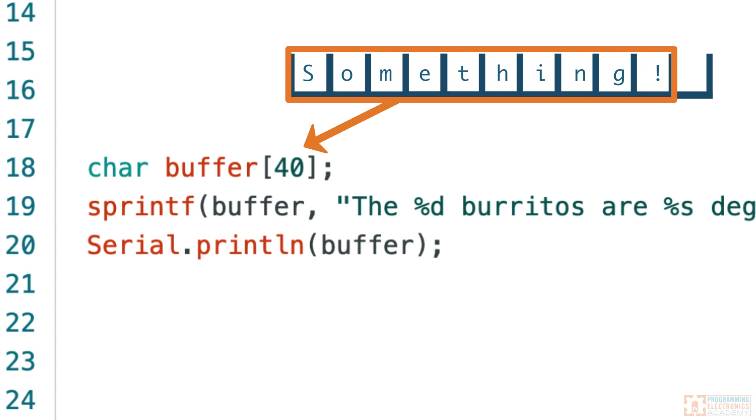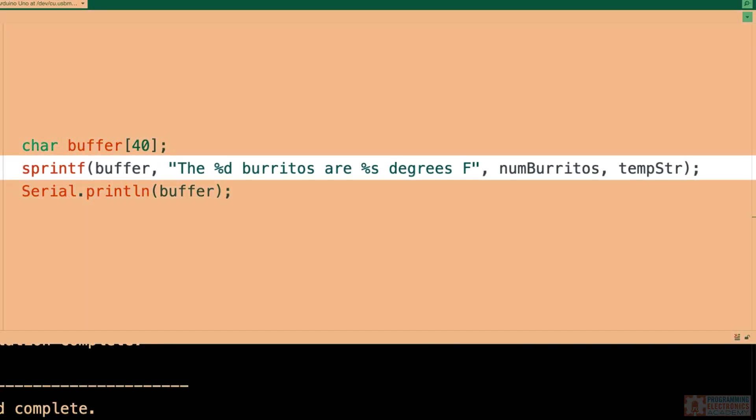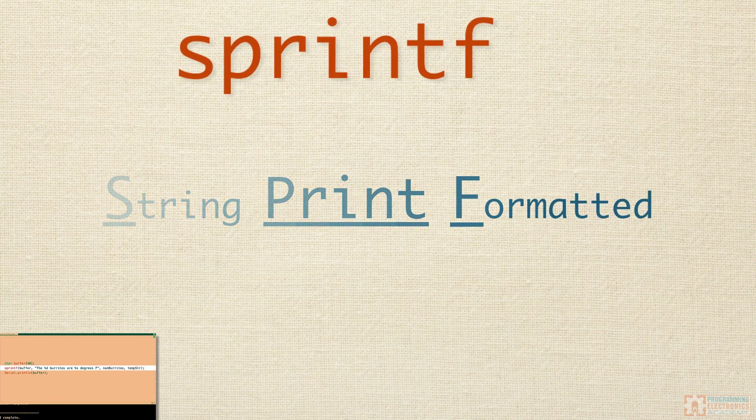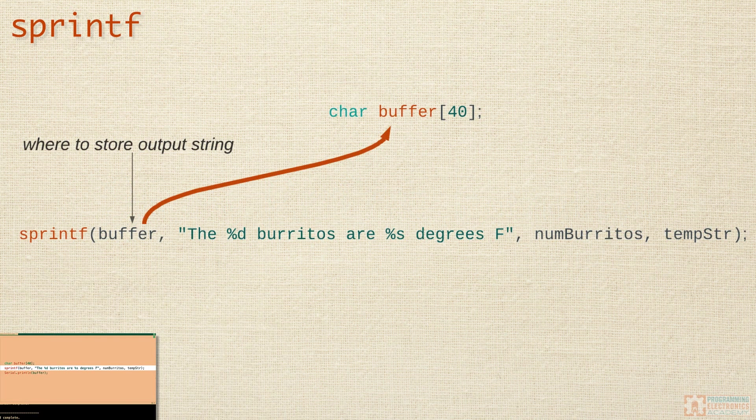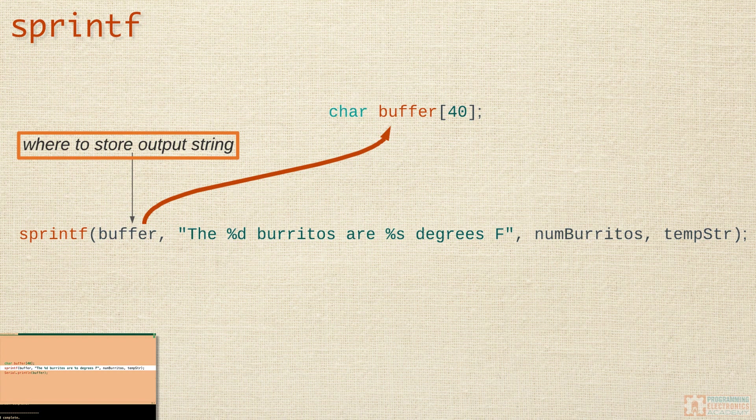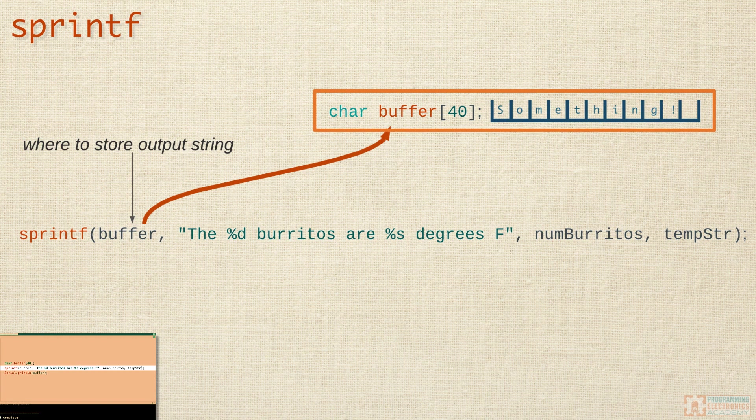The next line of code is the actual sprintf function. sprintf stands for string print formatted. The function takes a minimum of two arguments. The first argument is where you plan to store the string that sprintf will be making for you. This is where we use that character buffer that we just created on the previous line. So the string that sprintf formats is going to be stored in this character buffer.